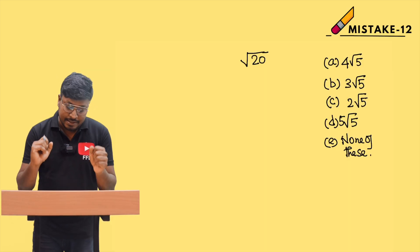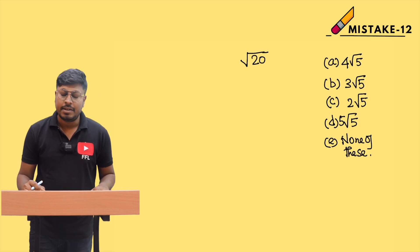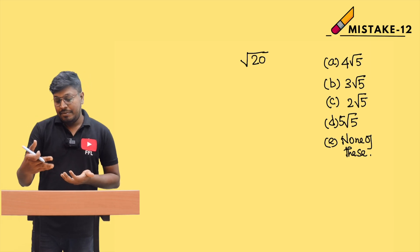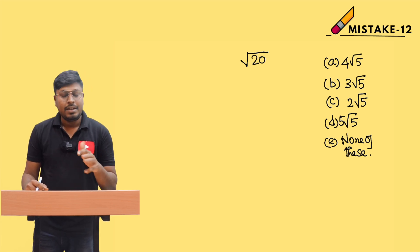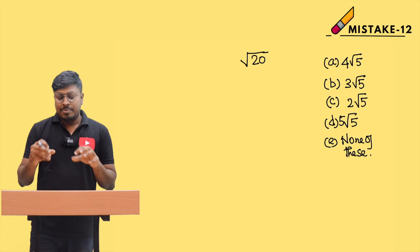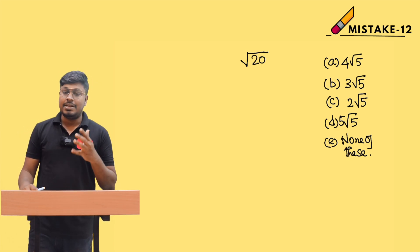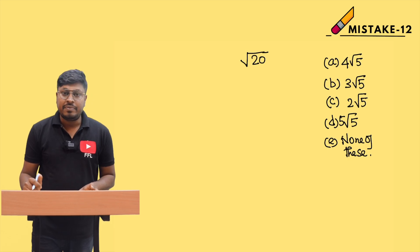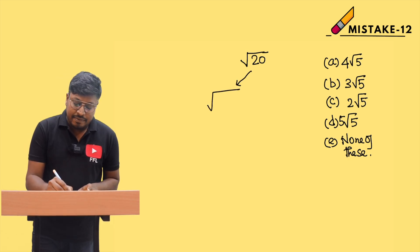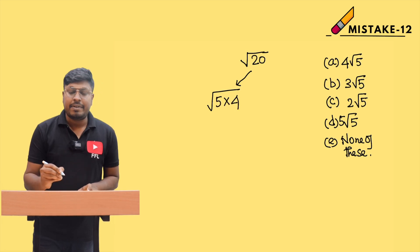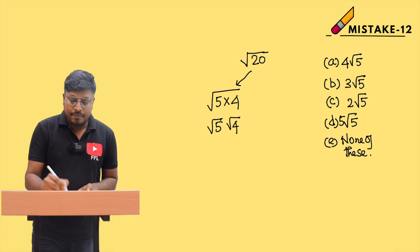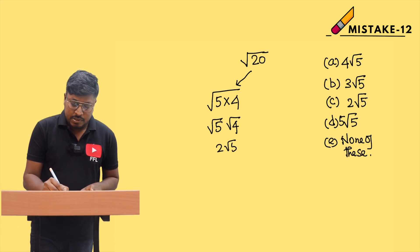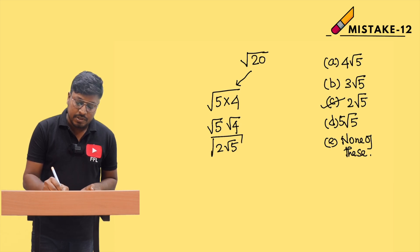This is video number 12 in the mistake series, based on square root numbers — beginners' mistakes. We need to expand the square root of 20 and find which option is correct: 4√5, 3√5, 2√5, 5√5, or none of these. We expand √20 as √(5×4), which gives √5 × √4 = √5 × 2 = 2√5. So option C is correct.